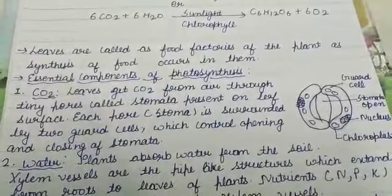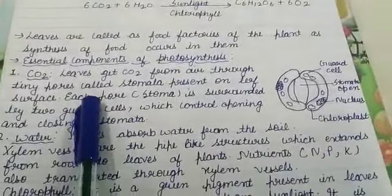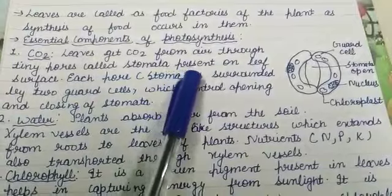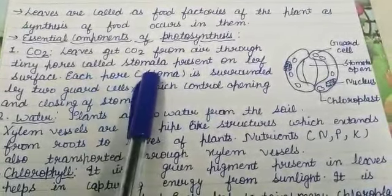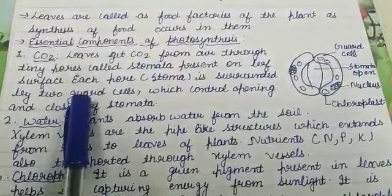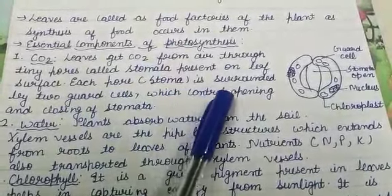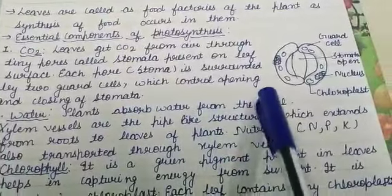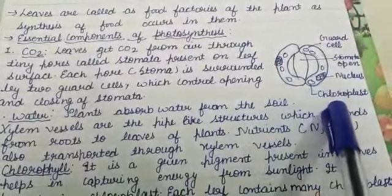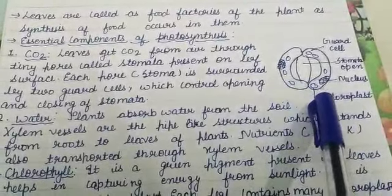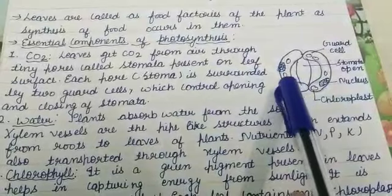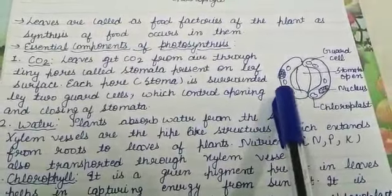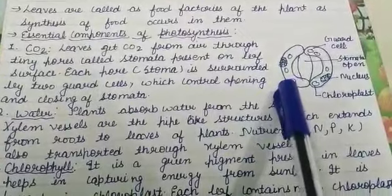Leaves are called the food factories of the plant, as synthesis of food occurs in them. There are four essential components of photosynthesis. The first is carbon dioxide — leaves get CO₂ from the air through tiny pores known as stomata, present on the leaf surface. Each pore is called a stoma, surrounded by guard cells which control the opening and closing of stomata. When guard cells open, stomata open and CO₂ enters; when guard cells close, stomata close and CO₂ entry stops.